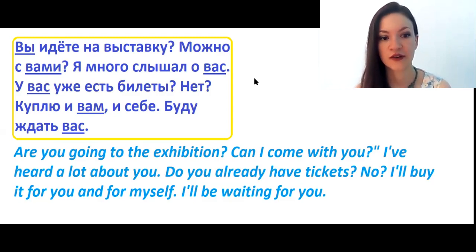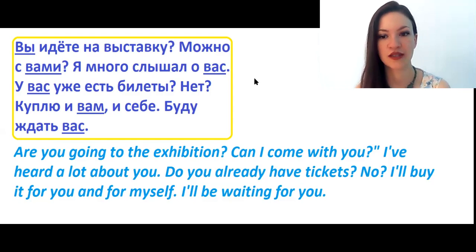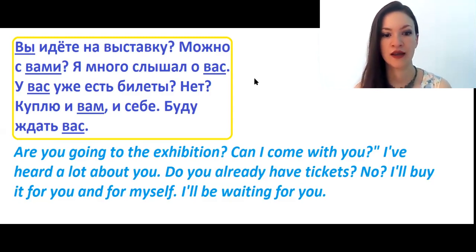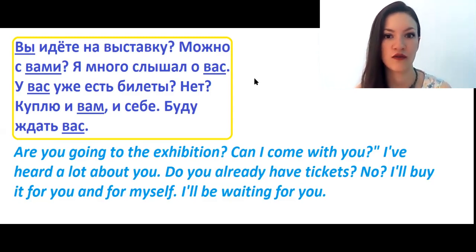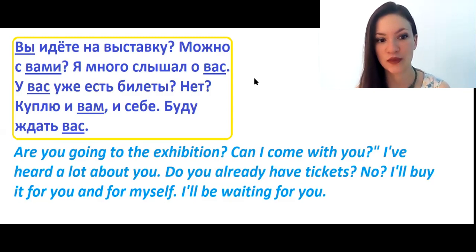Куплю и вам, и себе — the full sentence is куплю билеты и вам, и себе. The word билеты is the direct object. Вам here is dative because you are the addressee — 'I will buy it for you.' In Russian, when you talk about the addressee, you normally use dative case. Буду ждать вас — 'I will wait for you,' where вас is accusative.